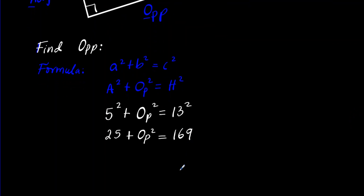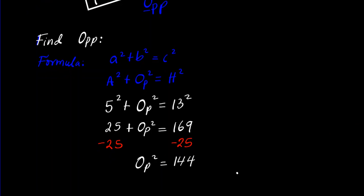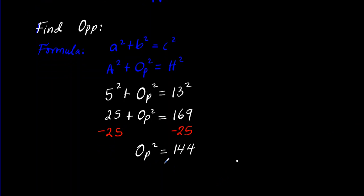When you subtract 25 from both sides that gives us opposite² = 144. Now take the square root of both sides of our equation and that will give us the opposite, which is 12.